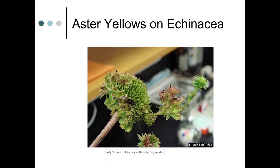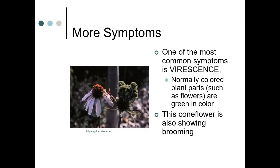Here's aster yellows on echinacea. You can see the flowers don't really form — they look more like leaves. One of the most common symptoms is virescence, where normally colored plant parts such as flowers turn green. This echinacea is also showing some abnormal blooming due to virescence.